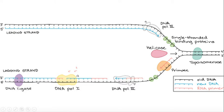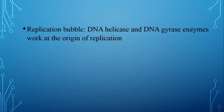Is tariqe se DNA replicate hota hai. Har jo naya strand banega, uske andar ek purana aur ek naya strand hogi. Isko semi-conservative method se divide hona kehte hain.